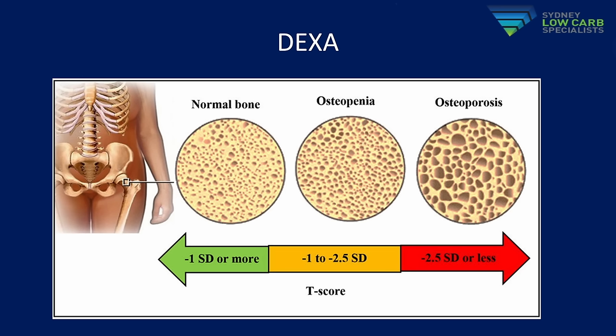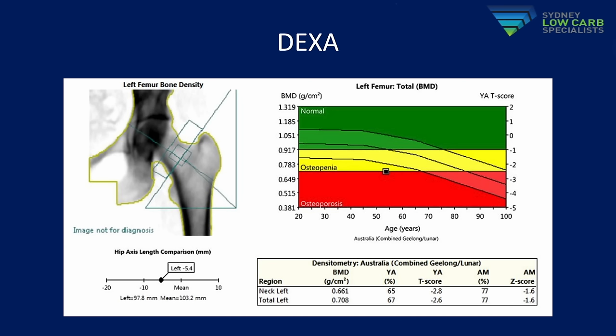A T-score of minus 1.0 means your bones are one standard deviation away from a young healthy person, and if your T-score goes under minus 2.5 that's indicative of osteoporosis. For example, a recent patient — a 54-year-old postmenopausal woman — had a T-score of minus 2.8 in her left hip, which is diagnostic. The standard teaching is you reach peak bone mass at about 30 to 35, and from that point it's generally downhill, so your peak bone density determines in part how careful you need to be later in life.